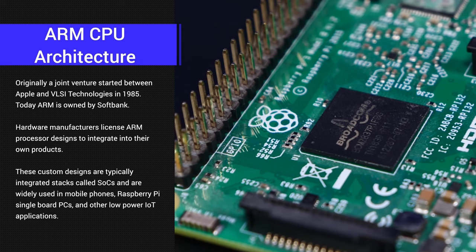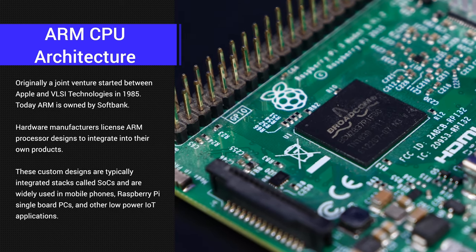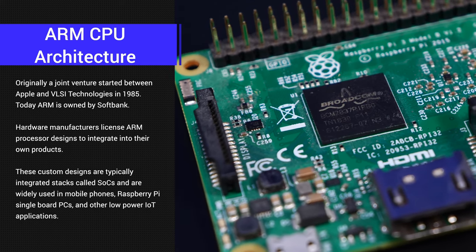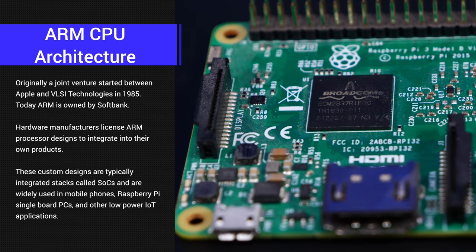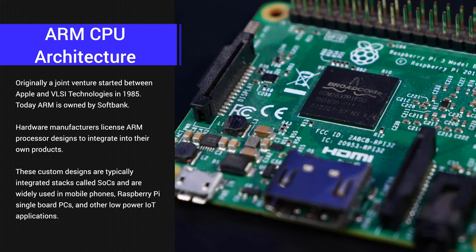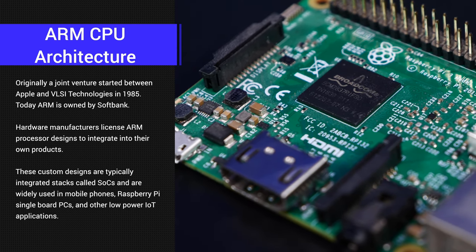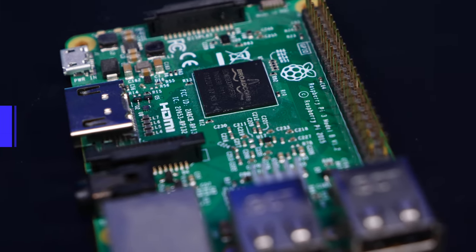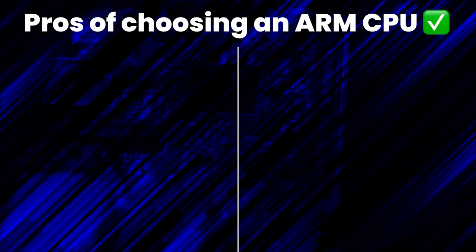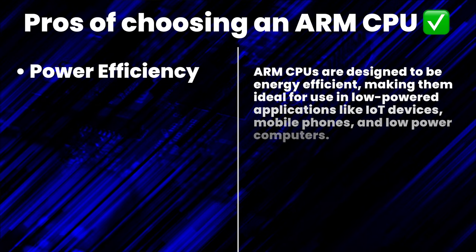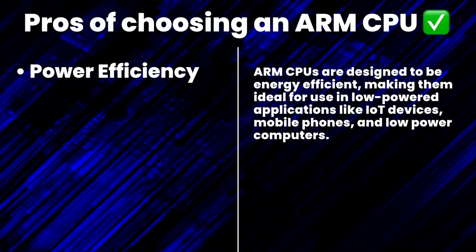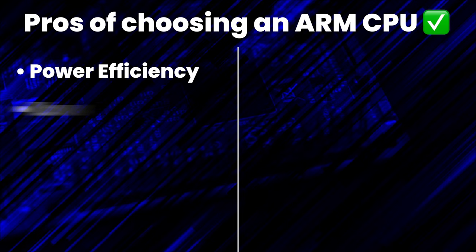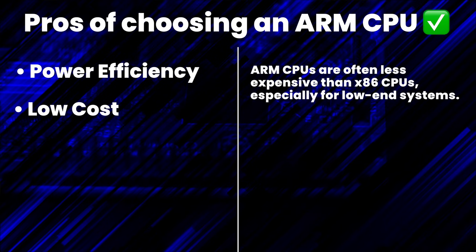Now let's talk about ARM CPUs. ARM CPUs aren't typically made available to buy and drop into a motherboard like x86 CPUs from Intel or AMD. The company that owns the intellectual property for ARM licenses its processor designs to other companies which then integrate them into their own products. For example, the mobile phone in your pocket runs on an ARM processor specially designed for your phone. In terms of a home server, this means you're looking at an SBC, or single board computer, like a Raspberry Pi or a ROC chip-based system. The first pro is power efficiency: ARM CPUs are designed to be energy efficient, ideal for low-powered applications like IoT devices, mobile phones, and low-powered computers. The next pro is cost: ARM CPUs are often less expensive than x86 CPUs, especially for low-end systems.